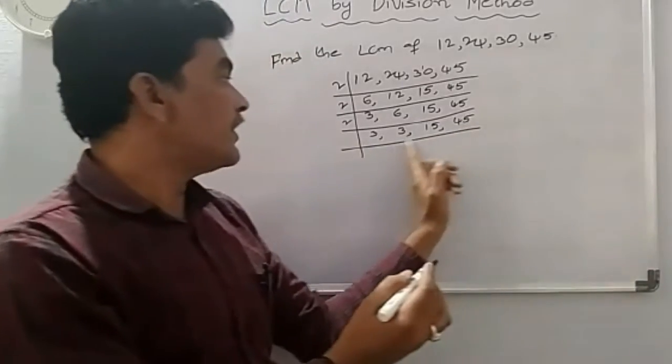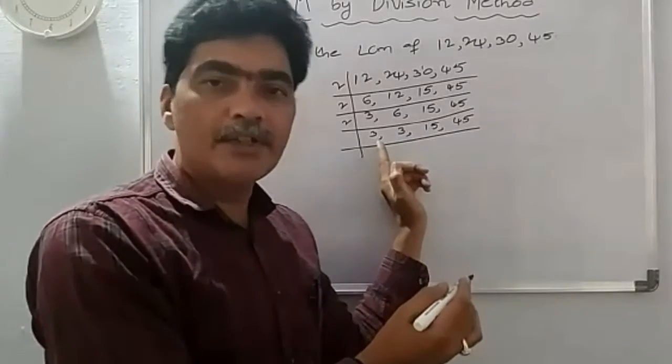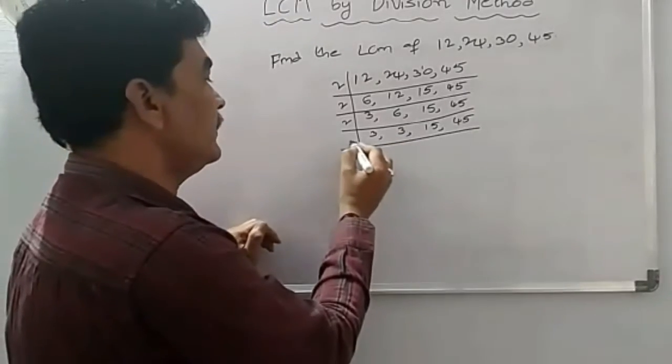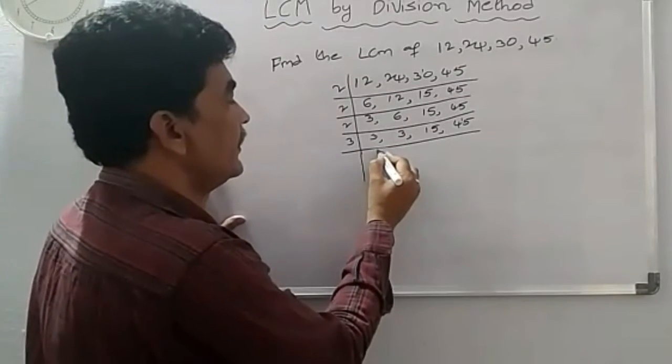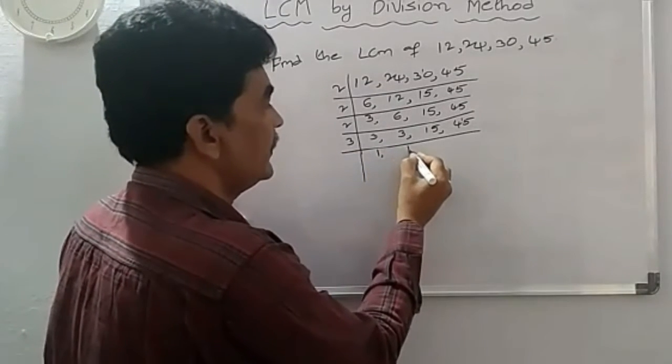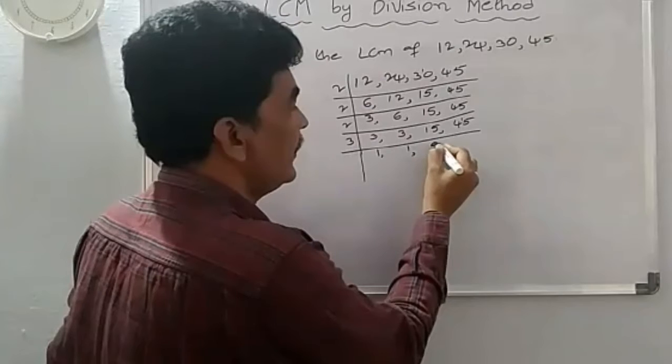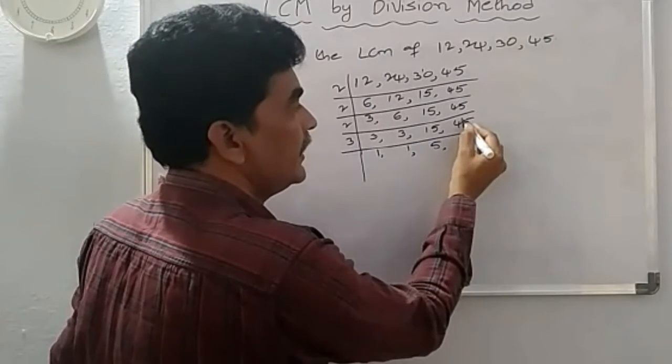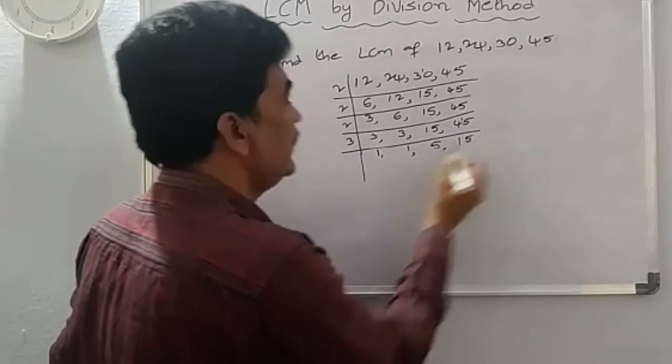Now, these numbers are not divisible by 2. Take next prime number, 3. 3, 3, 1's are 3. 3, 1's are 3. 3, 5's are 15. 3, 5's are 15.